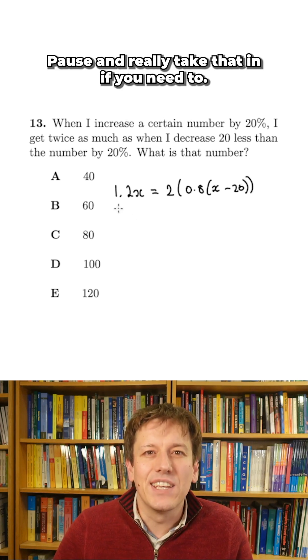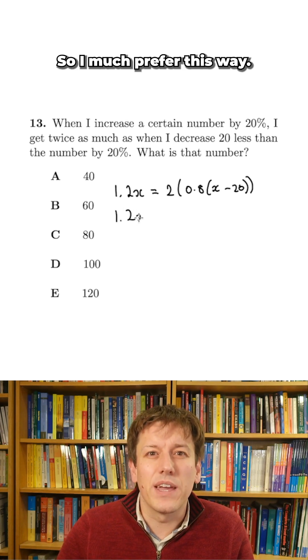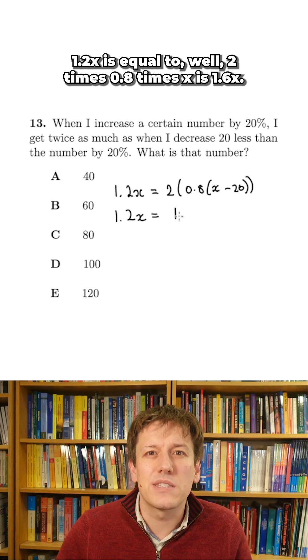Pause and really take that in if you need to. But now I've just got to multiply out the brackets and solve the equation. So I much prefer this way. 1.2x is equal to, well, 2 times 0.8 times x is 1.6x.